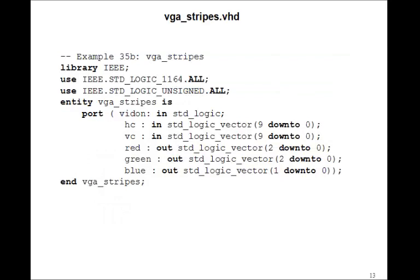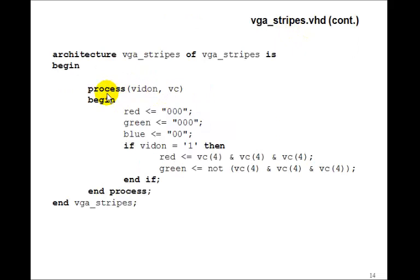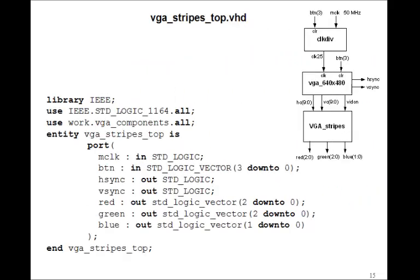So let's go back to VGA stripes. We have HC and VC for the counters as inputs and the red, green, and blue are going to be the outputs. So we'll have a process video on and VC. So the red, remember, we have three bits of red, so that's going to be three zeros, green, three zeros, blue, two zeros for default. And then if video on equals one, that is in the display region, we'll set red, where we need three bits, we'll make them each VC4, because we just decided that VC4, that corresponds to Q4 on the counter, would give us 16 pixels. So we concatenate these together, and green will just be not those vertical counters. So that's VGA stripes.